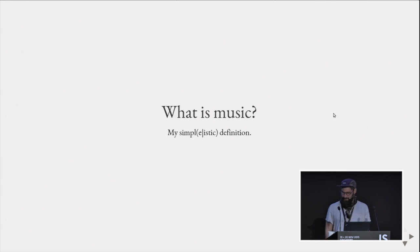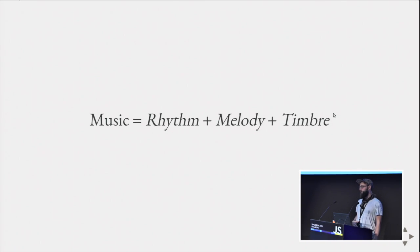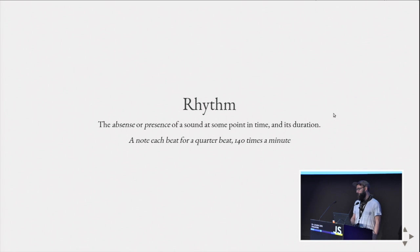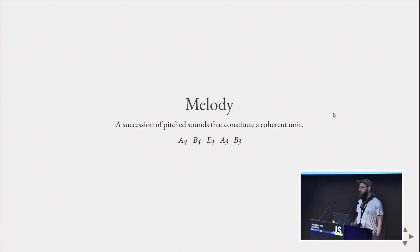What is music? It's a simplistic definition — not by any means the one academicians use. To me, and for today, music is rhythm plus melody plus timbre. Rhythm can be characterized as the absence or presence of a sound at some point in time and its duration — for example, a note each beat for a quarter beat at 140 BPM. Melody is the succession of sounds that have a pitch and constitute a unity — a tune you can sing and remember.